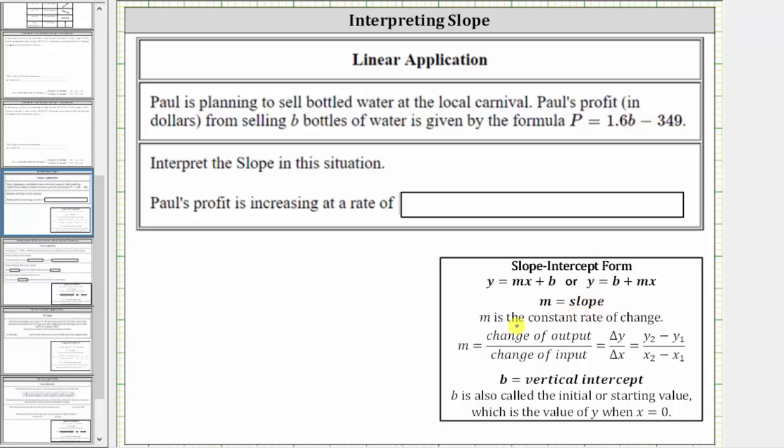The slope represents the constant rate of change, which is the change in the output divided by the change in the input, or when the equation is in this form, the change of y divided by the change of x. But notice, instead of y, we have P, instead of x, we have b, and therefore...